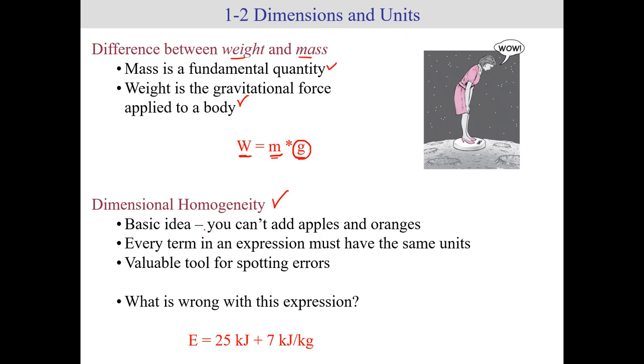There's also the concept of dimensional homogeneity. The basic idea between this term of big words is that you can't add apples and oranges. What does that mean? That means, basically, when you go ahead and you add numbers together in thermodynamics, make sure they're in the same units. For example, if I look at this expression down on the bottom of the slide, I have energy I'm trying to compute, and I am adding 25 kilojoules plus 7 kilojoules per kilogram. Now, I hope when you look at this, you notice that you can't add them together because 25 has units of kilojoules and 7 has units of kilojoules per kilogram. I can't add those two together directly.